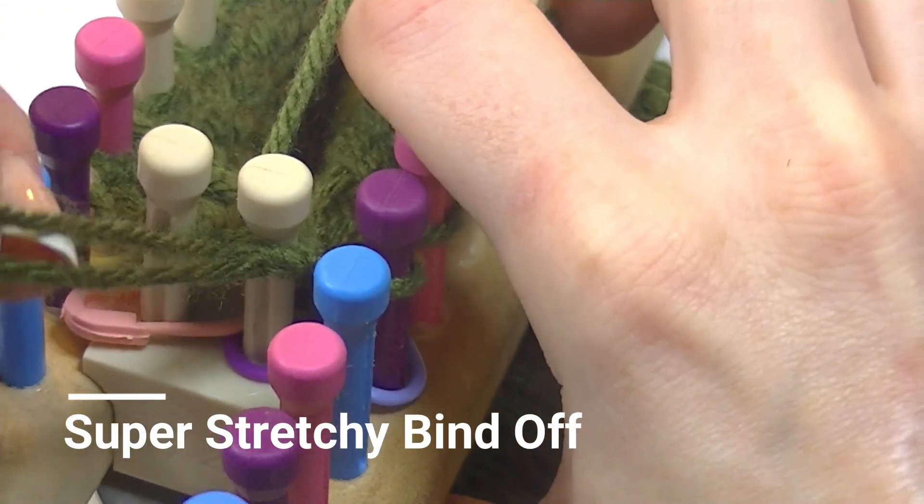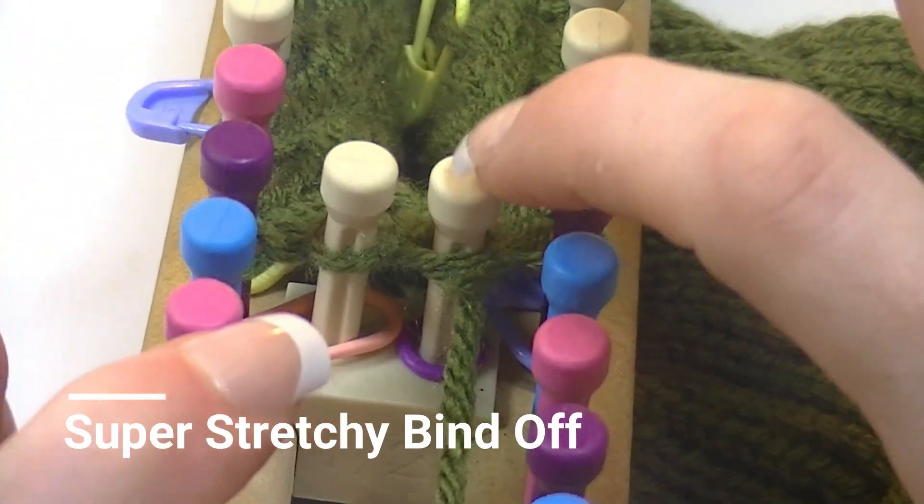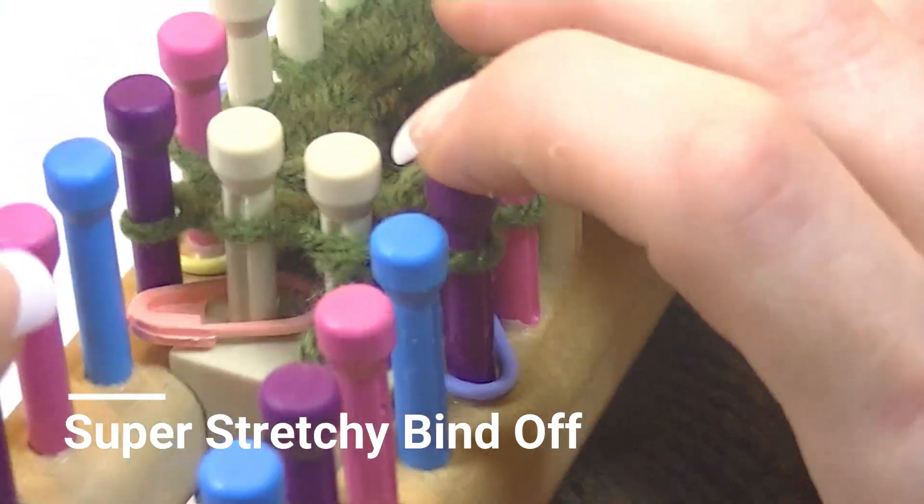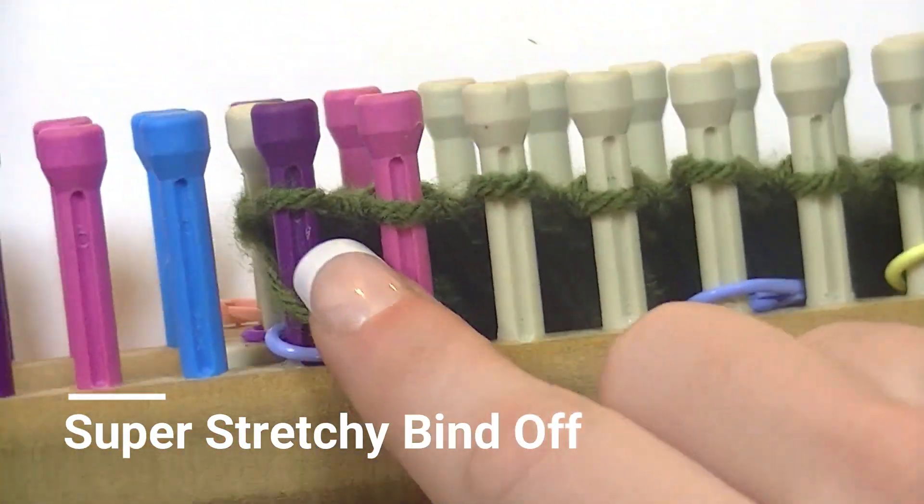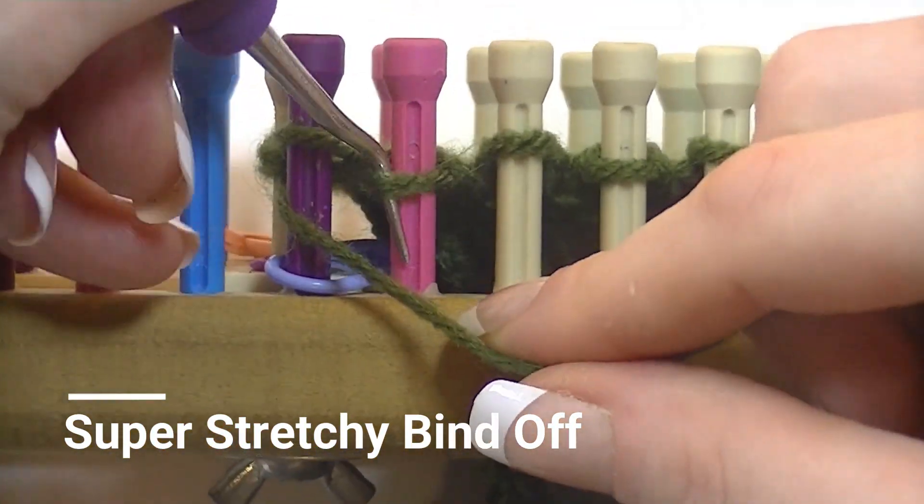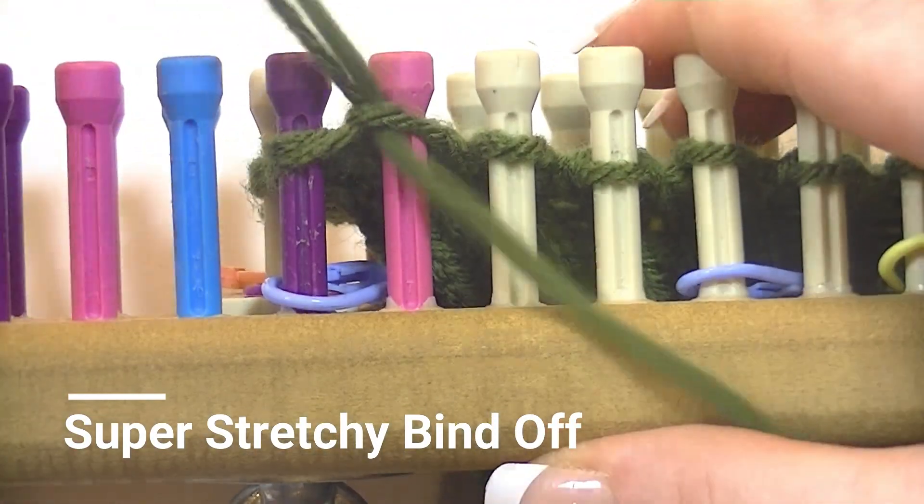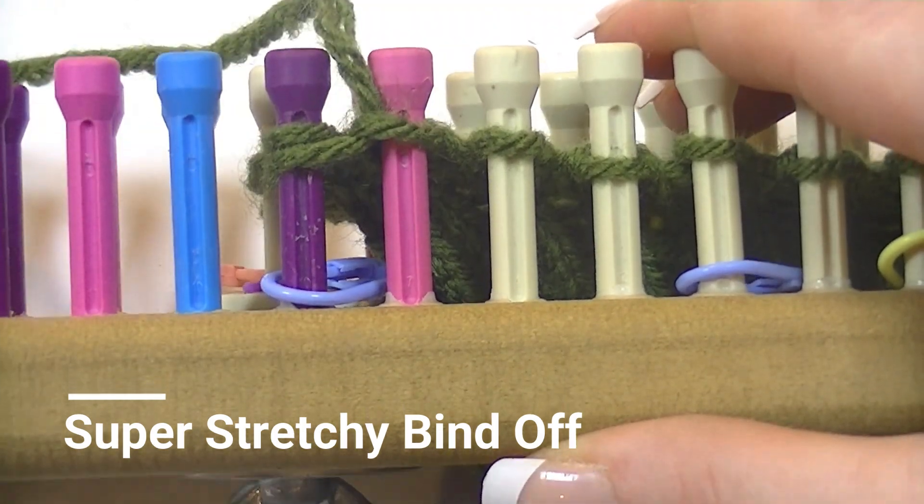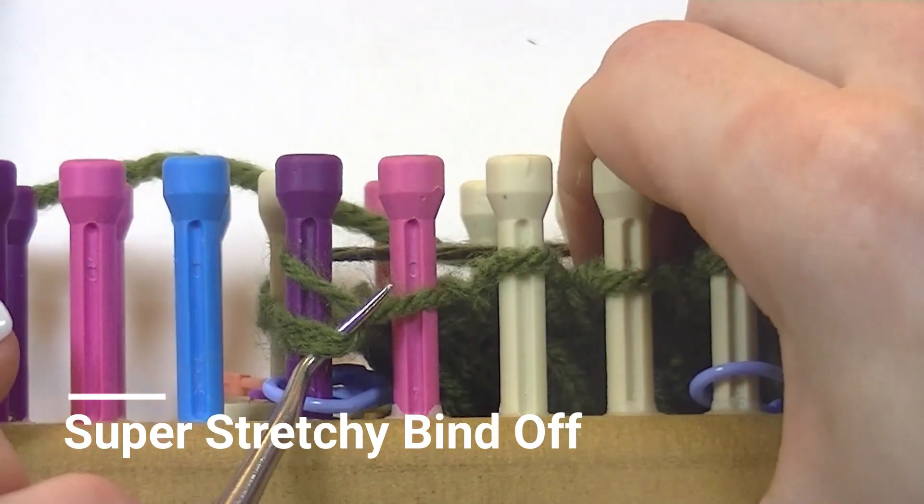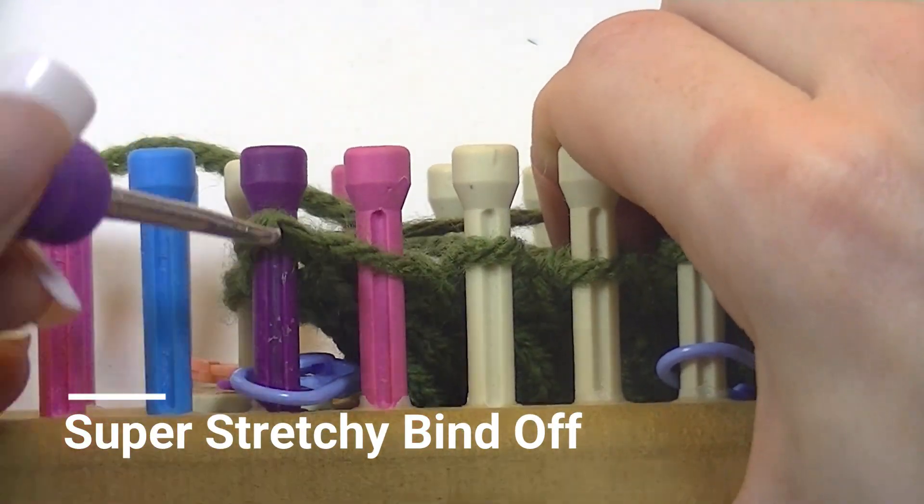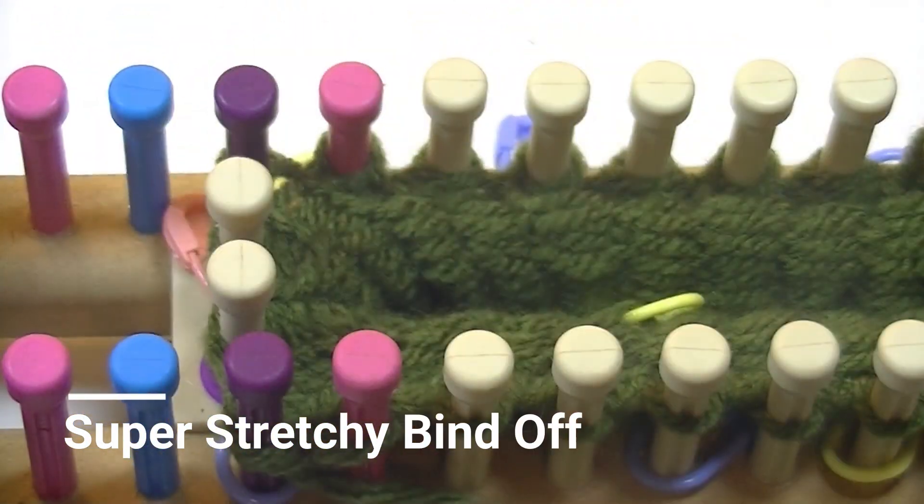But pull the working yarn down. Now our working yarn is coming from peg 02. So our first step again is skip one peg and then down through the top and pull it up like you would for a purl stitch. Then we go back one peg and pull it down through the top like you do a knit stitch. Work this all the way around back to your first peg.